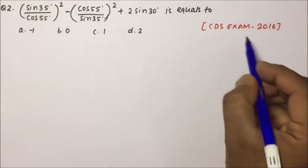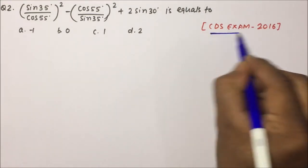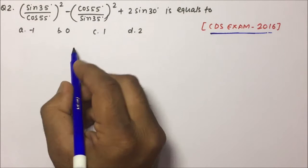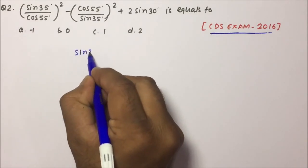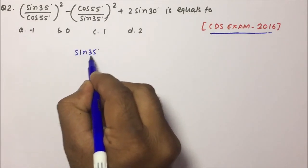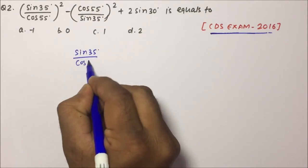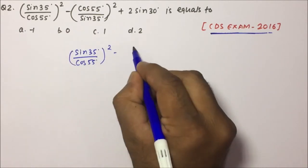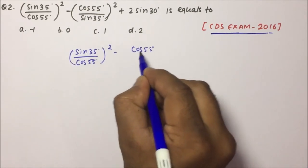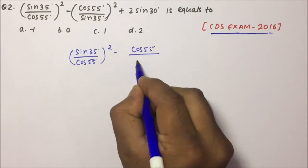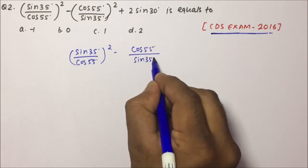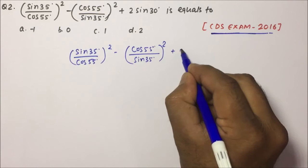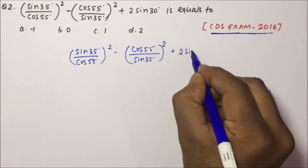Question number 2 — this question has also been asked in the CDS exam 2016. If [sin 35°/cos 55°]² − [cos 55°/sin 35°]² + 2 sin 30°, we have to calculate this value.